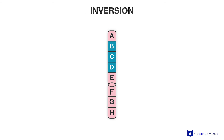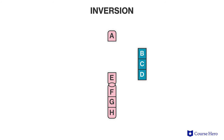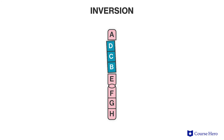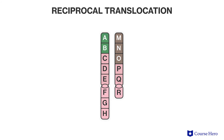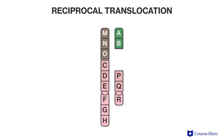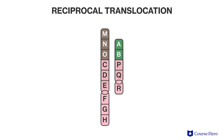Inversion is when a segment of DNA breaks off a chromosome, flips around, and reattaches in the opposite direction. And finally, translocation is observed when a segment of DNA breaks off and then attaches to a different chromosome.